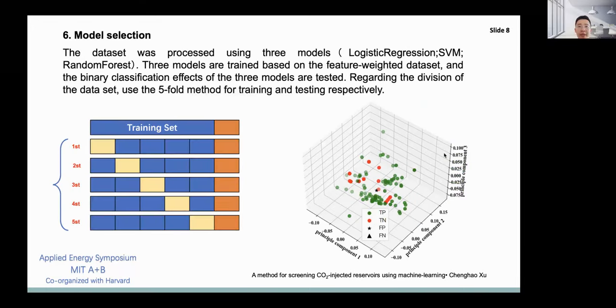Three models are trained based on the feature-weighted data set, and the binary classification effect of the three models is tested. The division of the data set uses the fivefold method for training and testing respectively. From the test results, the learning effect of random forest is better than that of logistic regression and support vector machine. Random forest divides multiple training sets through sampling with replacement, trains the models separately, and finally votes the prediction of multiple models. In summary, the accuracy is better than that of the single model algorithm, and the risk of overfitting is reduced. The model prediction results are not determined by specific feature values and can better deal with nonlinear problems.